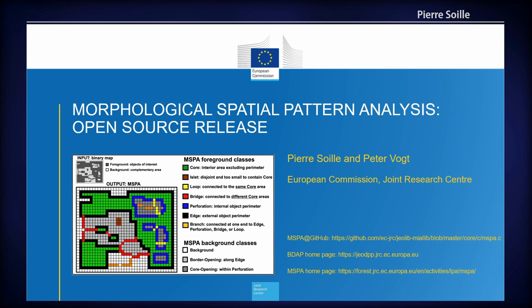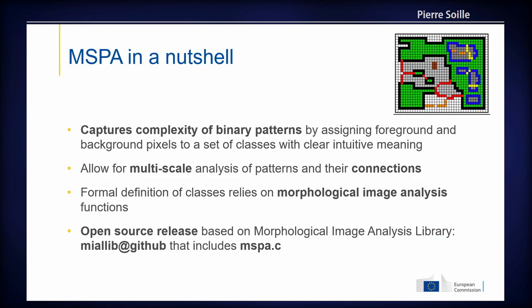The background is also segmented into outside and inside background, as you can see in the different gray tones. The source code information is available there. In a nutshell, it captures the complexity of binary patterns from foreground and background pixels into a set of mutually exclusive feature classes with intuitive meaning, which is very important for communicating the results.